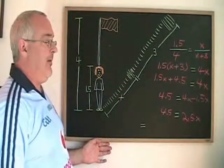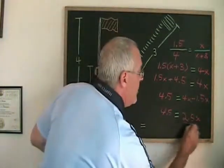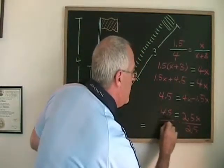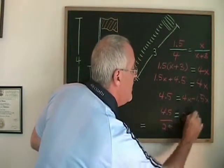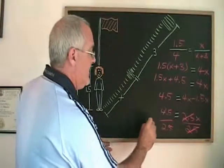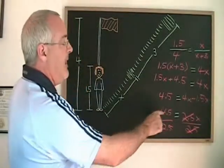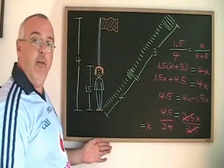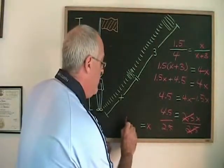And now if I divide both sides by 2.5, these cancel, my x is isolated and is equal to 4.5 divided by 2.5 which is 1.8.